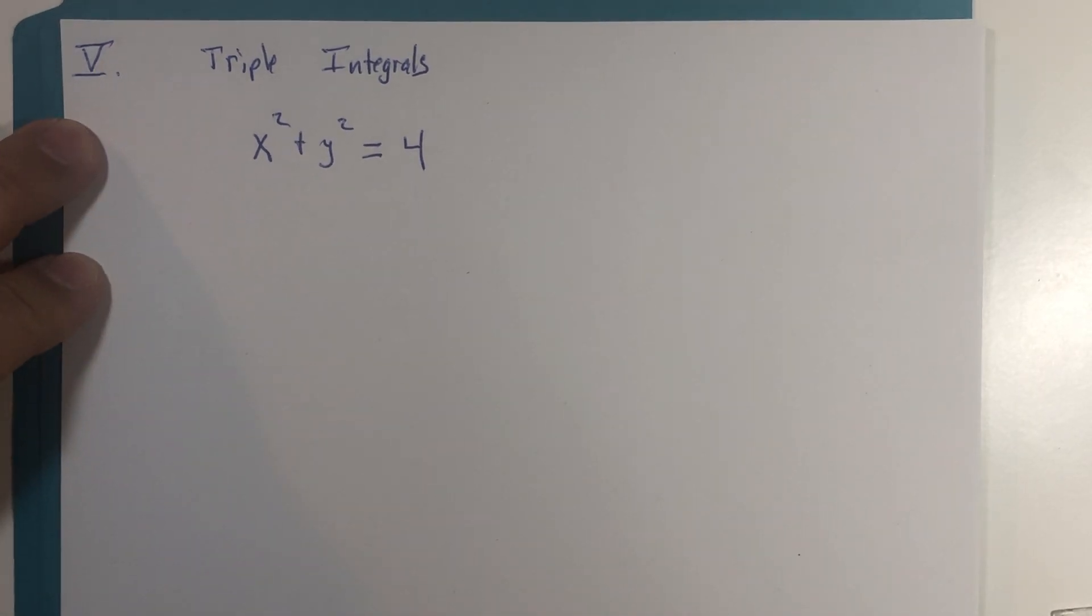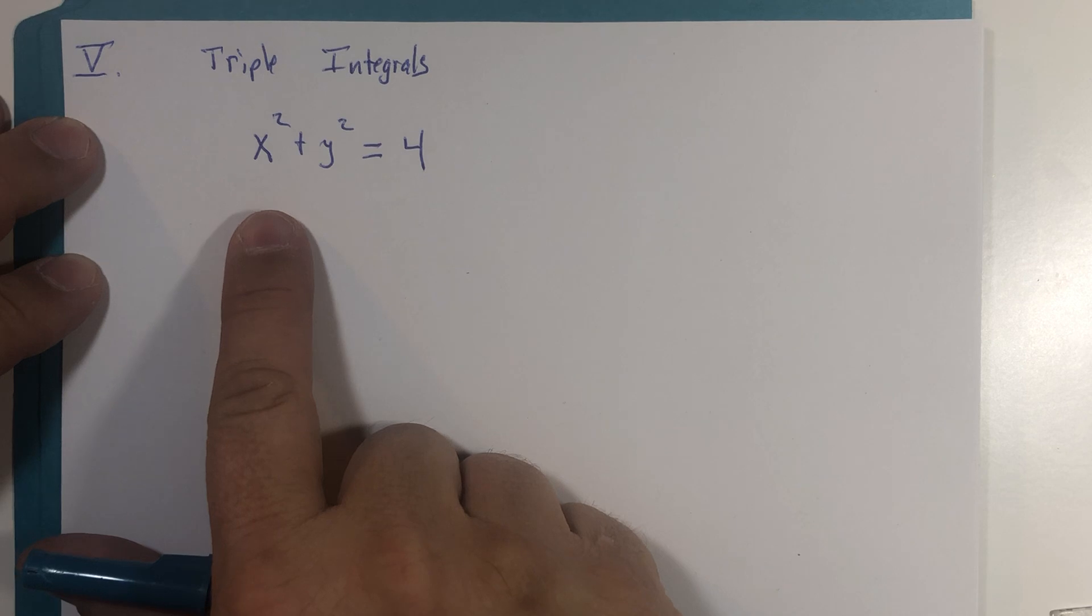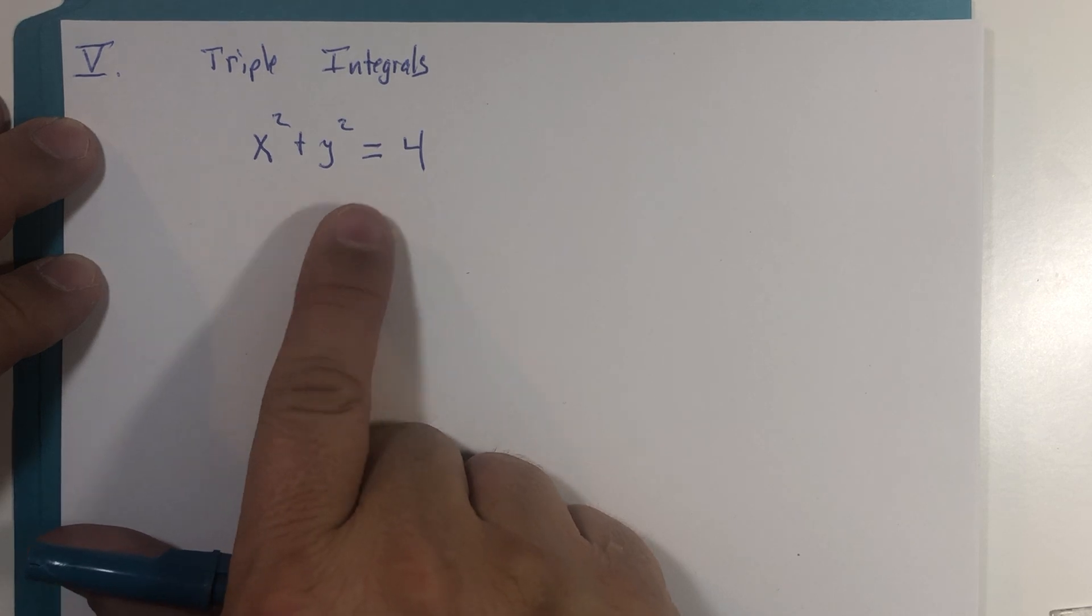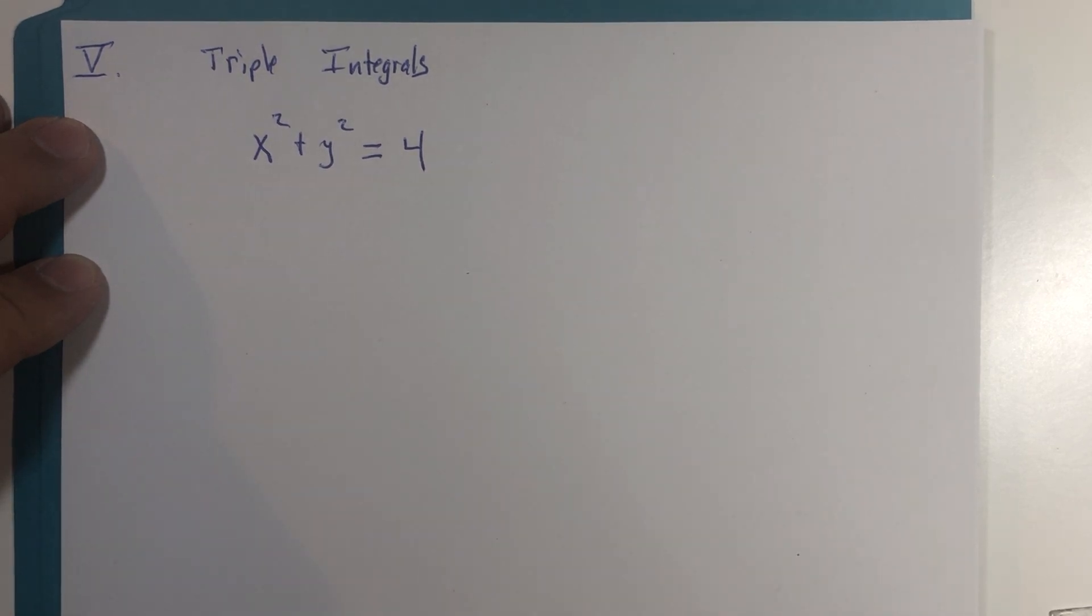All right, continuing with triple integrals. If I were to ask you, what does the graph of x squared plus y squared equals 4 look like? I think I could fool many of you.